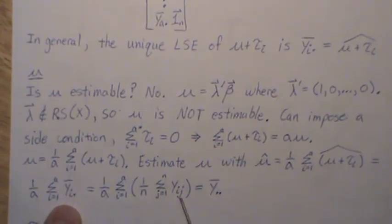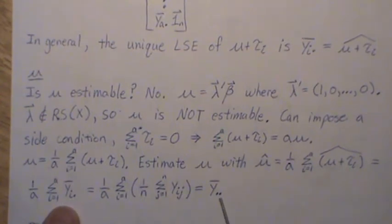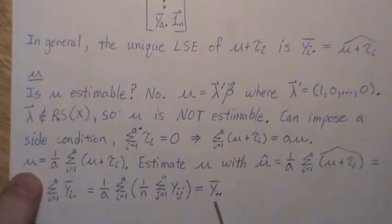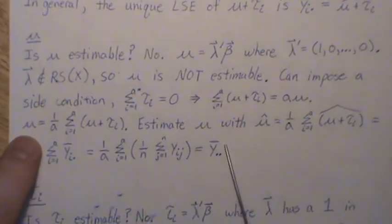If we plug in the ith treatment effect here, remember, that's the sample mean, the treatment i mean, and then you take that out and it's a double sum of the y's, which is actually the grand mean. So we'd estimate the μ parameter with the sample grand mean.